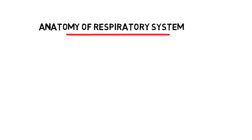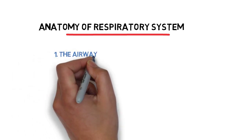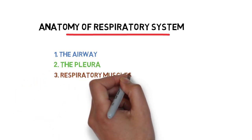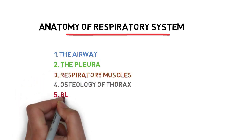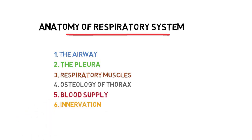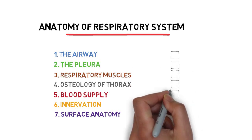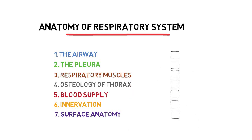These topics include the components of the respiratory system and others from different systems but are clinically relevant. We are going to learn about the airway, the pleura, respiratory muscles, osteology of thorax, the blood supply, innervation, and surface anatomy. Let's leave some checkboxes to track our progress. So, let's begin.